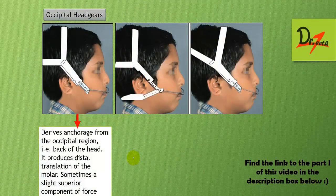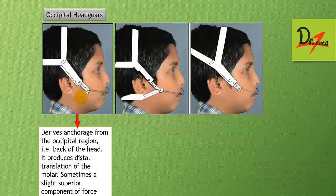Let us see the occipital headgear. It derives anchorage from the occipital region, that is the back of the head. It produces distal translation of the molar, and sometimes a slight superior component of force may also be seen.